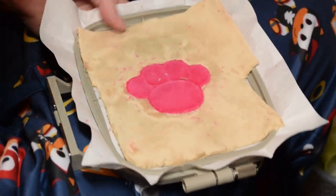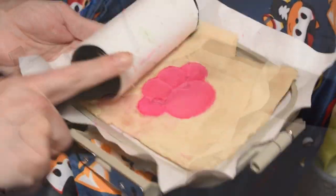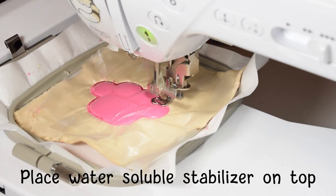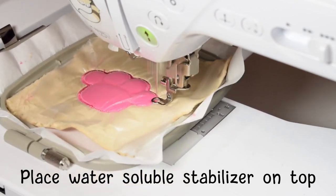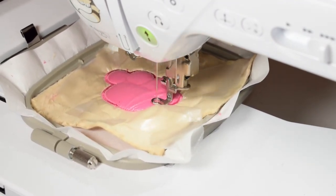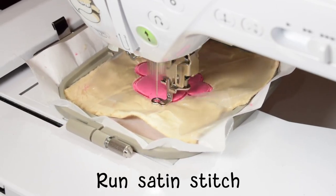When you're done trimming away the excess fabric, clean away all the fibers, place a piece of water-soluble stabilizer on top, and Sulky Solvy is my favorite type. Run the satin stitch and remove it from the hoop when you're done.